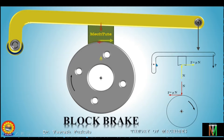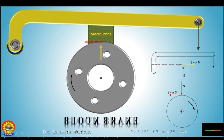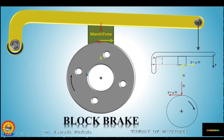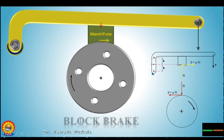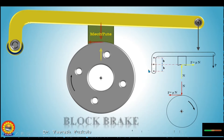Now, the fulcrum point will not always pass through the point of contact of the drum and the block. The lever can be pivoted at various different positions. Suppose it is pivoted at a distance B above the line passing through the point of contact, or it can be at a position below that line, also at a distance B. These can be various positions of the fulcrum point, and we will see them one by one for force analysis.